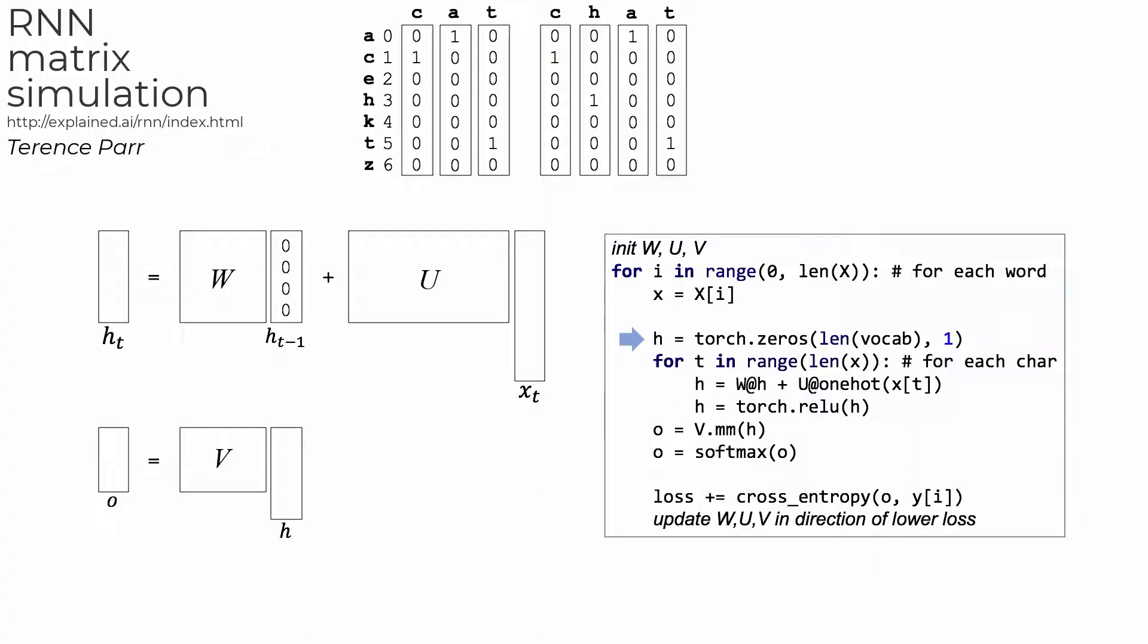A recurrent neural network is nothing more than a pipeline of vector transformations, and so the goal here is to see how the one-hot vectors for characters move through an RNN system of matrices.